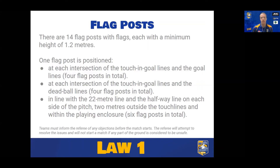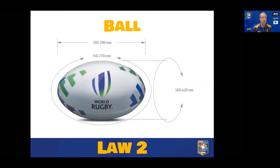If there's anything about the ground that a team doesn't like, they must let the referee know ahead of the game. The referee cannot start a match unless the ground is considered safe. On to the ball — the minimum and maximum dimensions are shown on the diagram. This is a full-size rugby ball, usually up to about 30 centimetres in length, about 600 millimetres around, and about 750 millimetres around point to point.